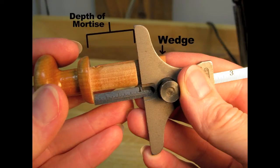Check the length of your wedge against your depth gauge and trim it to final length. This wedge needs to be trimmed quite a bit.